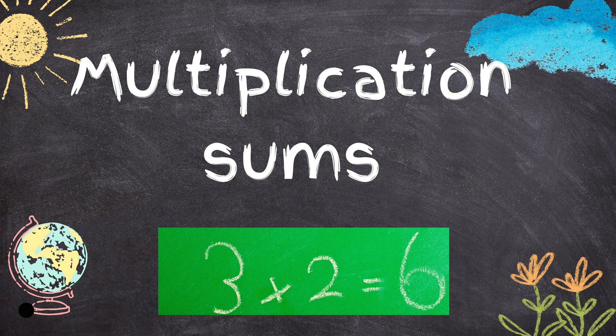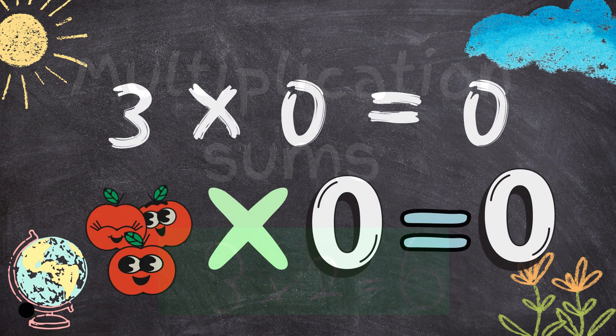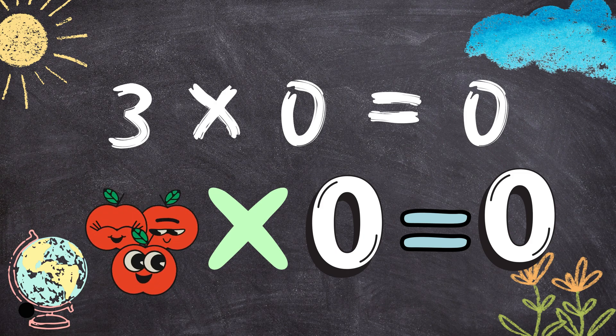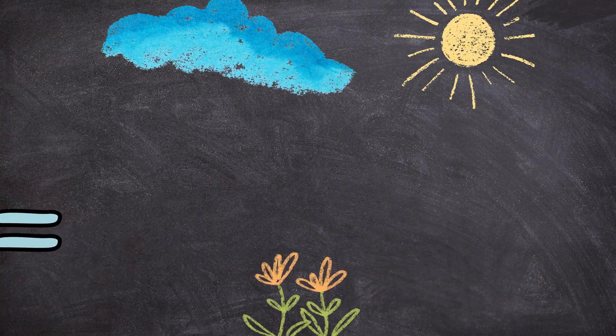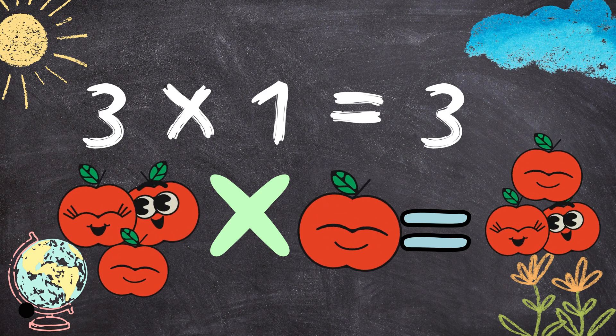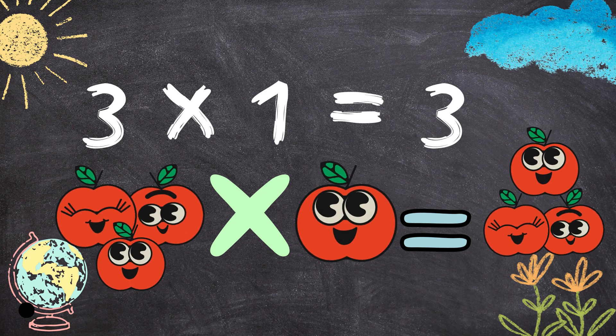Today we'll be doing three times tables. Let's learn about three times tables. Three times zero equals to zero. Three times one equals to three.